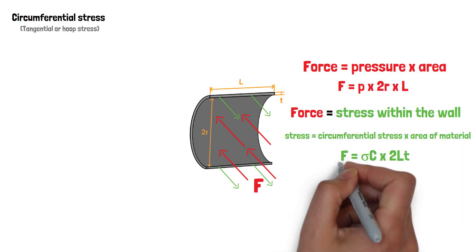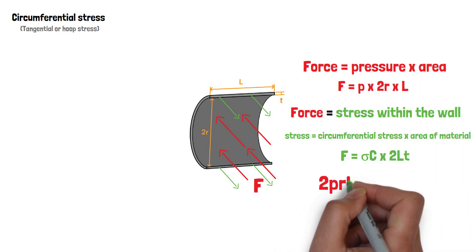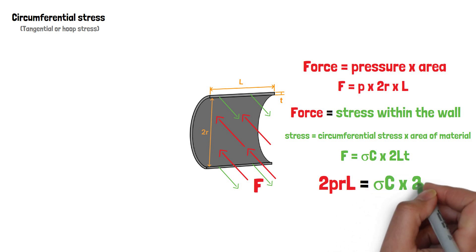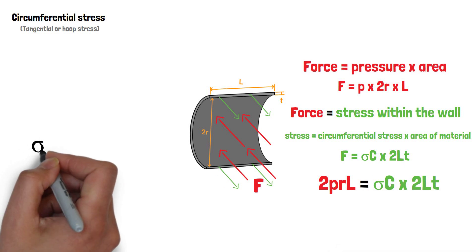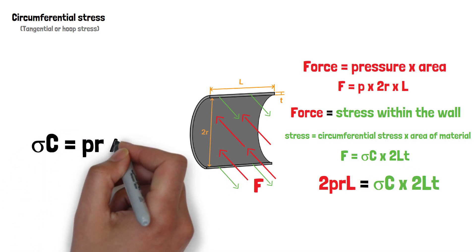By combining our two equations, we have 2PRL equals sigma C times 2LT. We can transpose this to find the circumferential stress, which becomes sigma C equals PR over T.